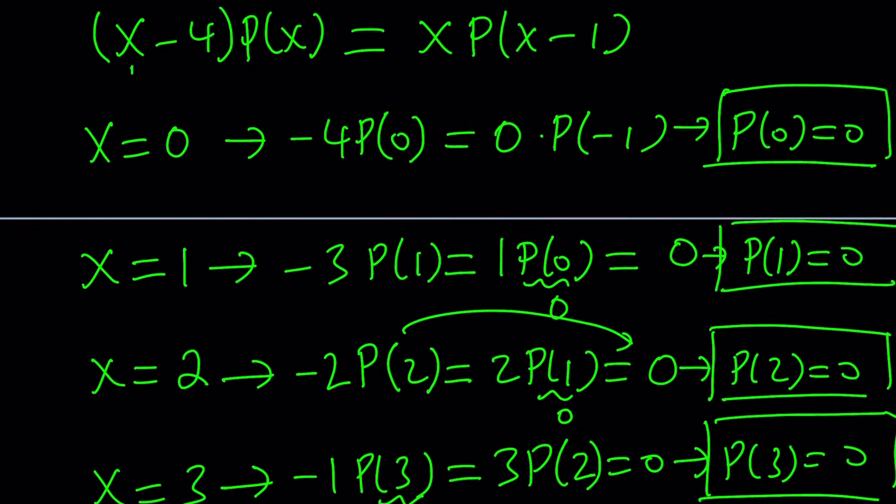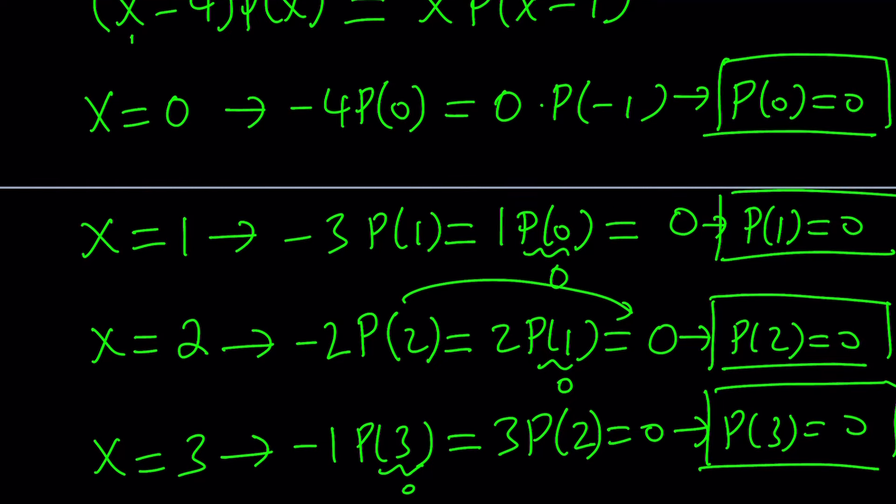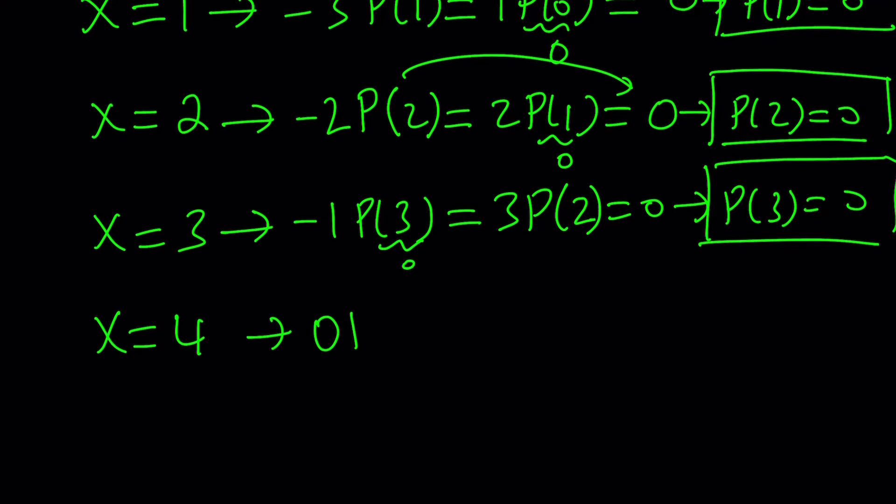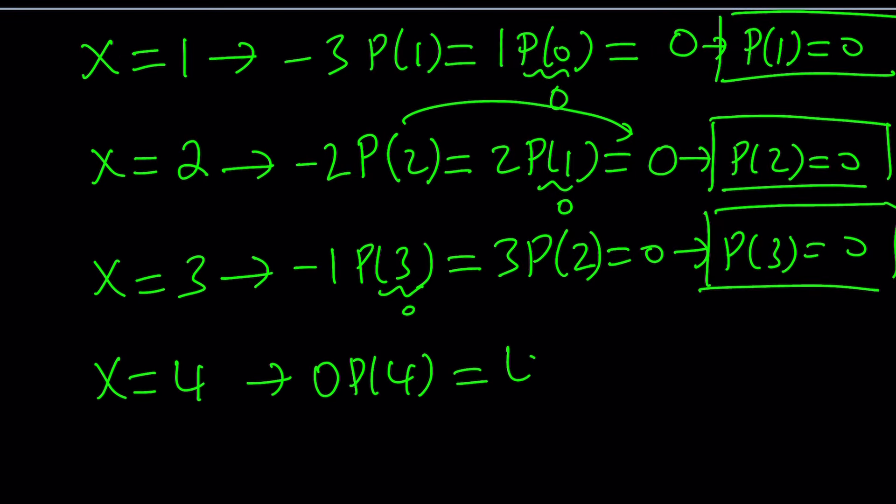We have an identity, so we could keep using it, but guess what? Something breaks down. If you replace X with 4 on the left-hand side, you're going to get 0 times P of 4, which is already 0. And on the right-hand side, you're going to get 4 times P of 3.